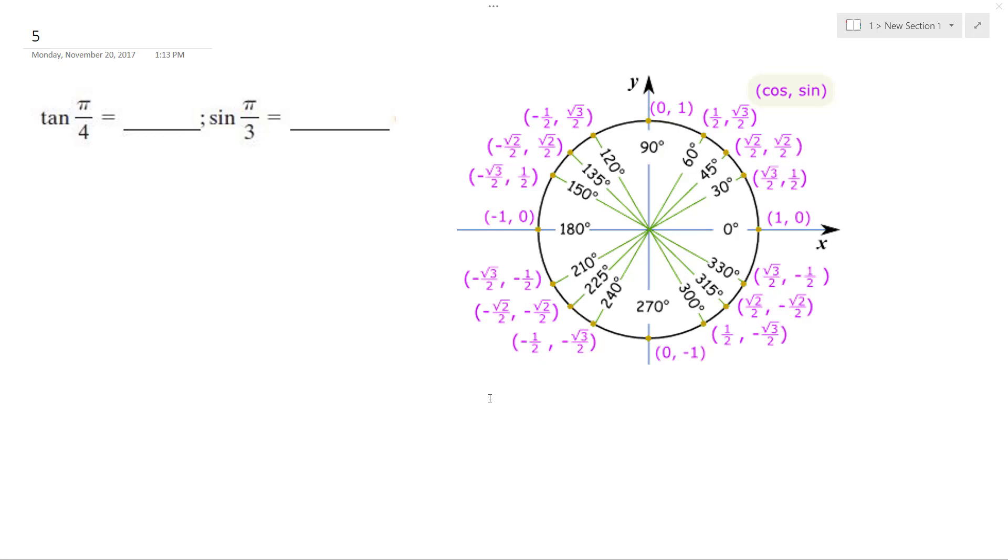So we want to know the tangent of π over 4 and the sine of π over 3. Tangent of π over 4 is 45 degrees.